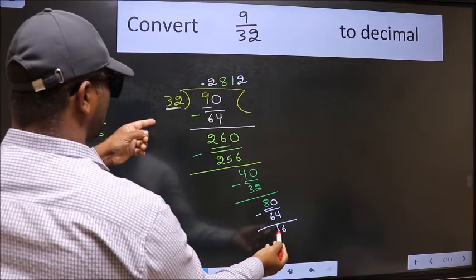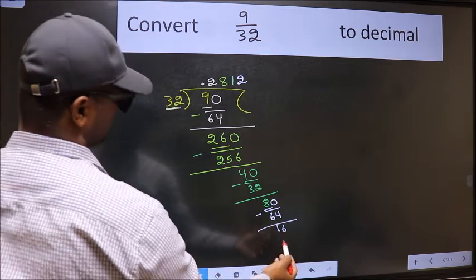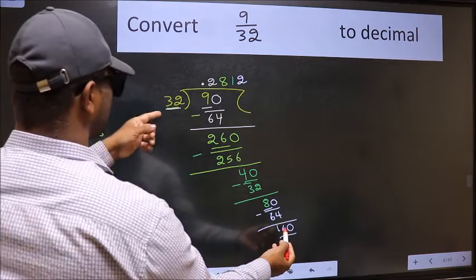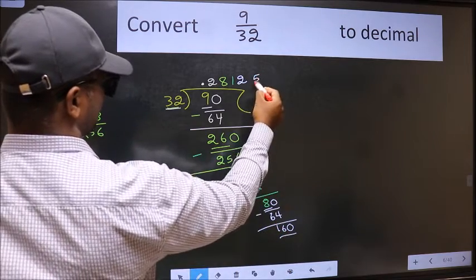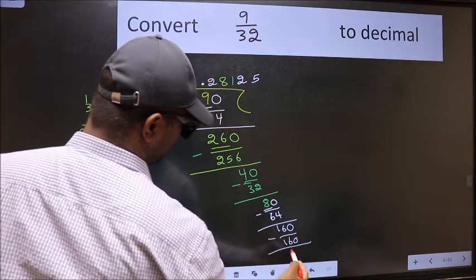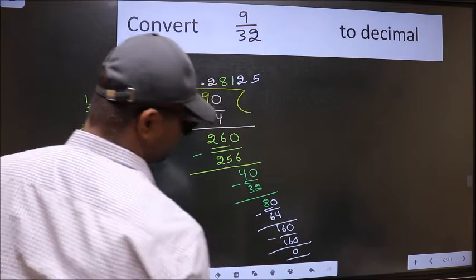16 is smaller than 32, and we already have the decimal, so directly take 0. So 160. When do we get 160 in the 32 table? 32 times 5 is 160. Now we should subtract. We got 0.